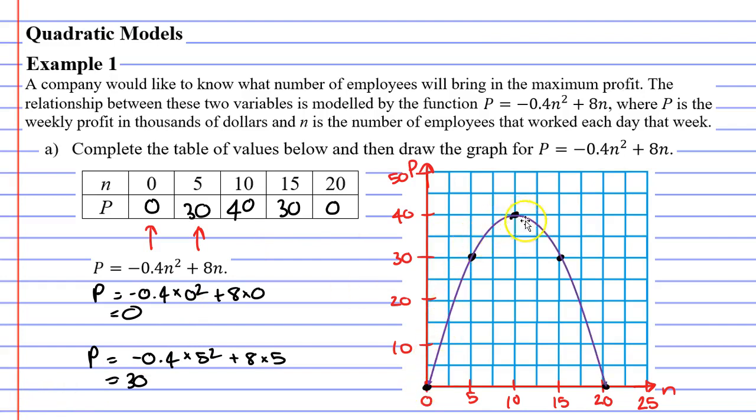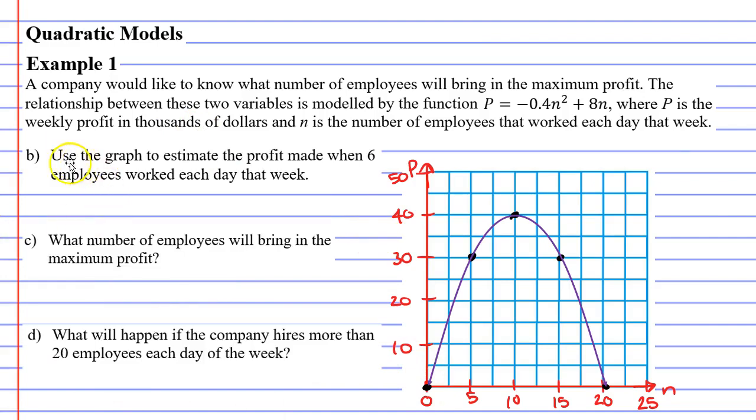So here's our parabolic curve. I've drawn it in purple. We'll move on to our next set of questions, questions B through to D now. It says, use the graph to estimate the profit made when six employees worked each day that week. So six employees would be about here. And if I go up to the graph, as soon as it touches the graph, I then move to the left.